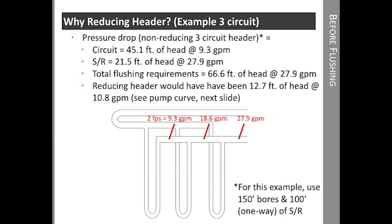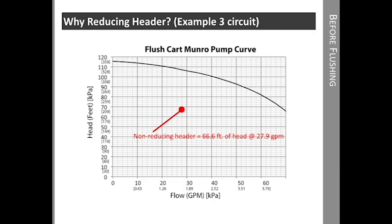Let's take a look at how the two designs compare on our flush cart pump curve. In the case of the Monroe pump, you can see that we can still purge air from the loop even if we don't reduce the header on a three circuit loop with three quarter inch circuits. Naturally, the reducing header would be even easier to flush. However, let's look at a larger ground loop.